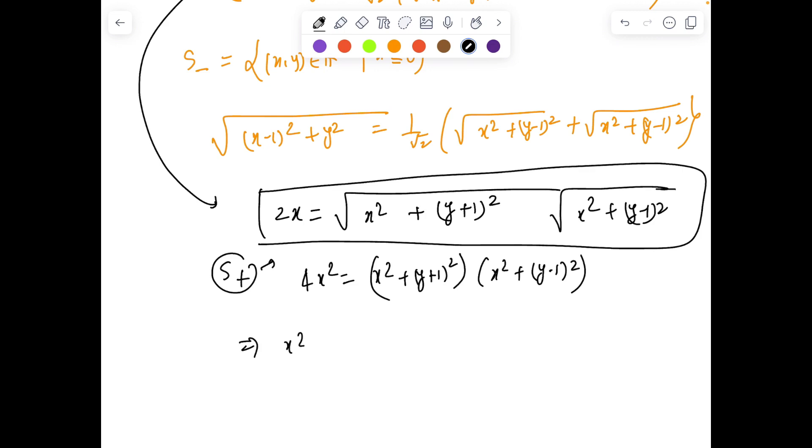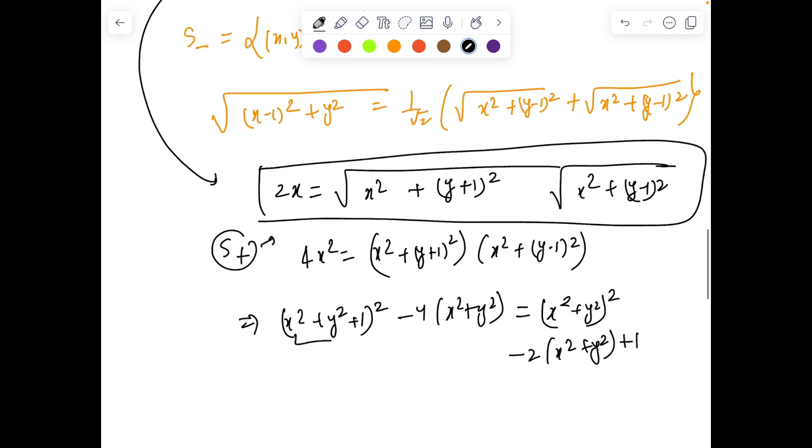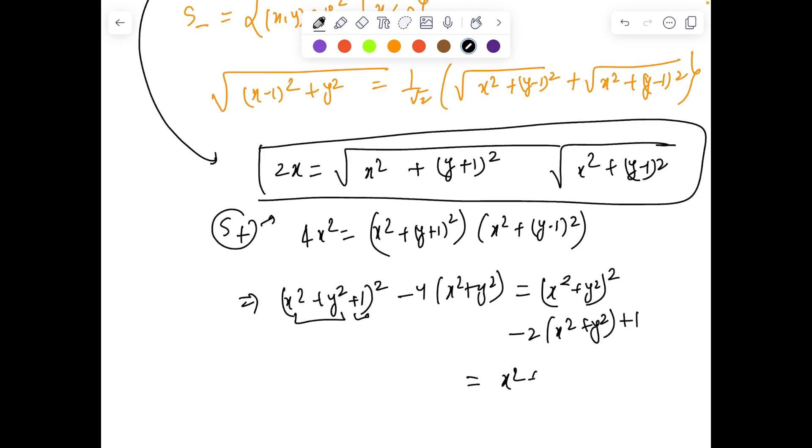Since we know (x² + y² + 1)² - 4(x² + y²) is going to give me (x² + y²)² - 2(x² + y²) + 1, this you can easily write as (x² + y² - 1)².